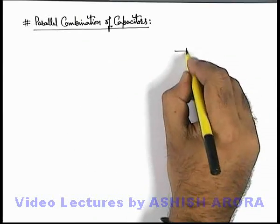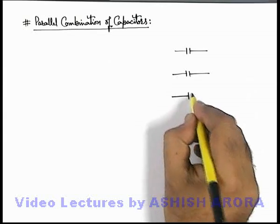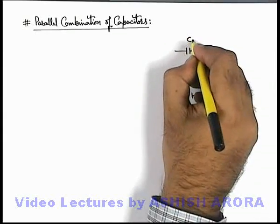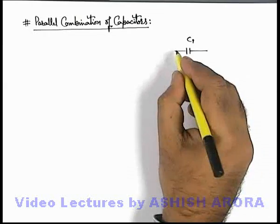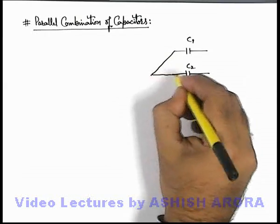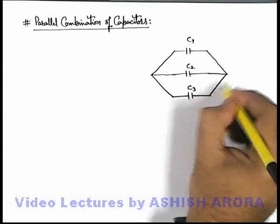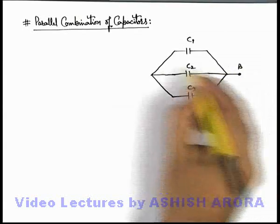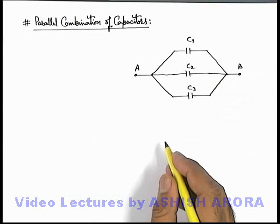Similar to the situation, say if we are given with 3 capacitors C1, C2, and C3 are their capacitances. In this situation, if all the left terminal and right terminals of the capacitors are joined together, then we can say across terminals A and B, these 3 capacitors are connected in parallel.